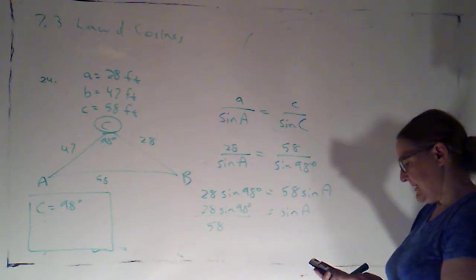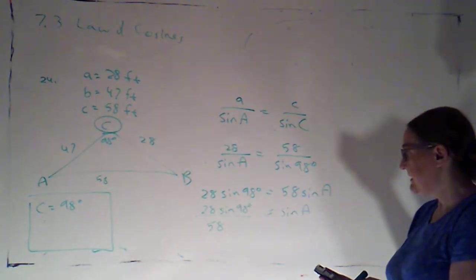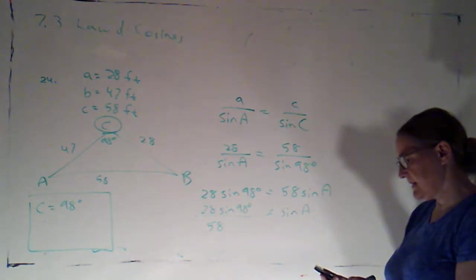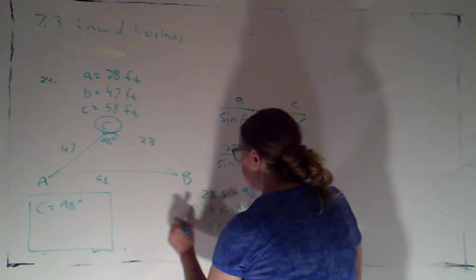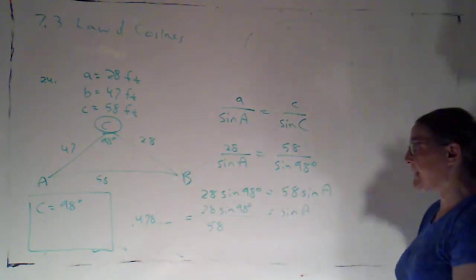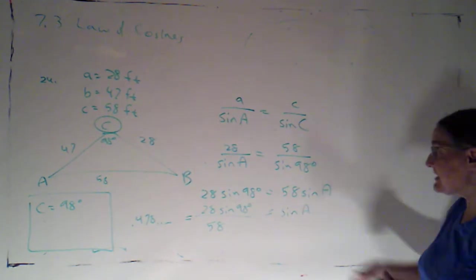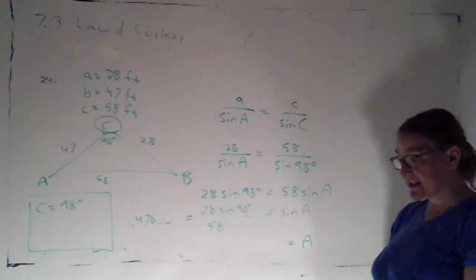Okay. So that's 28 times sine of 98 divided by 58. And I get about .47 blah blah blah, .478 blah blah blah. I'm just going to write that in, but I'm not done because I need to find A.